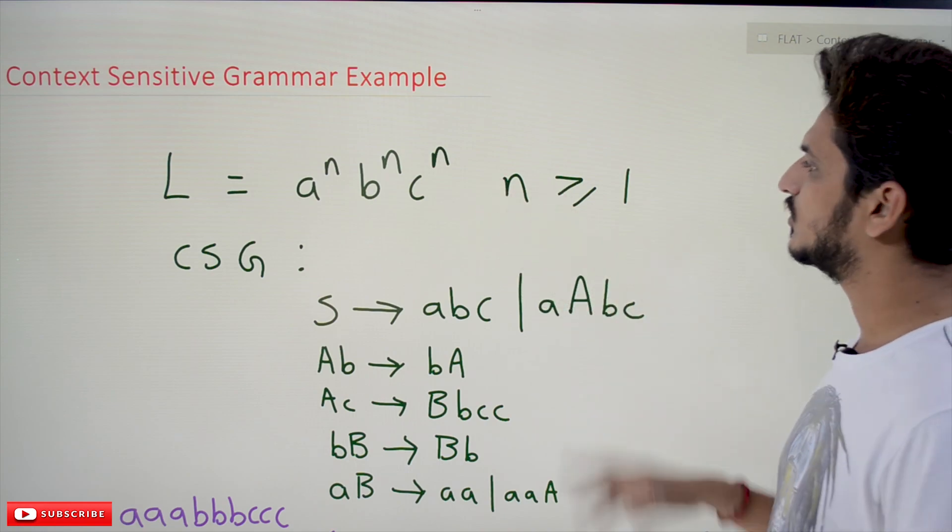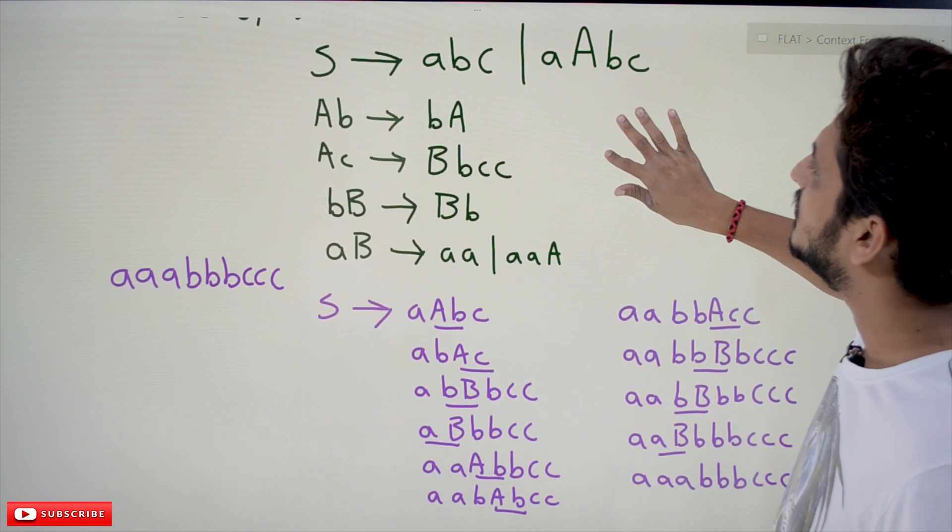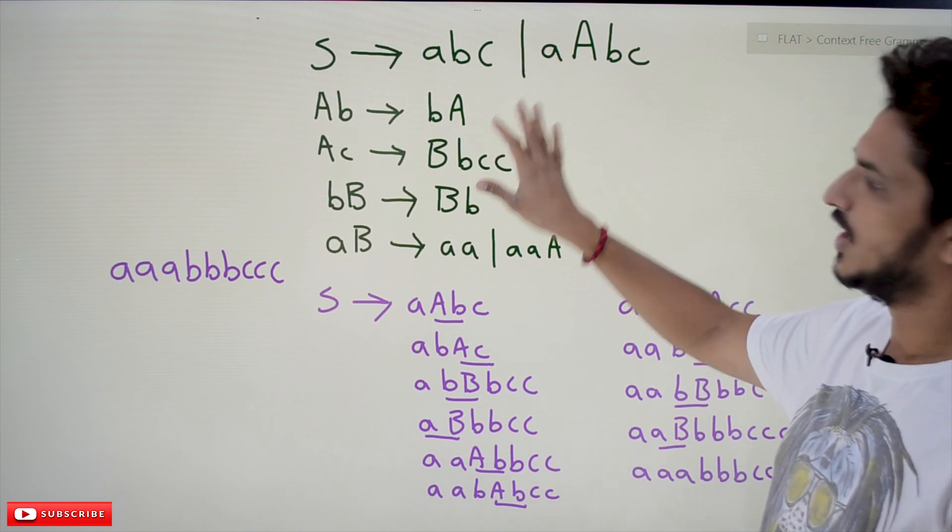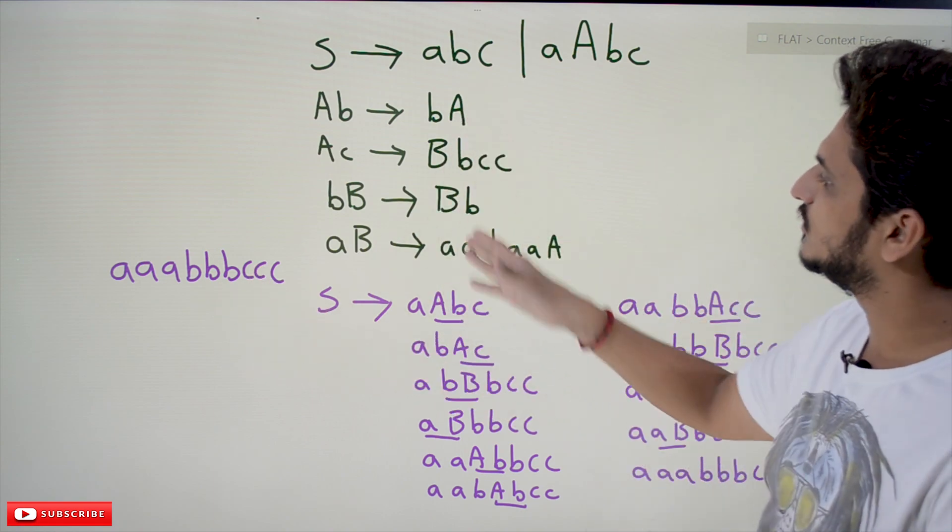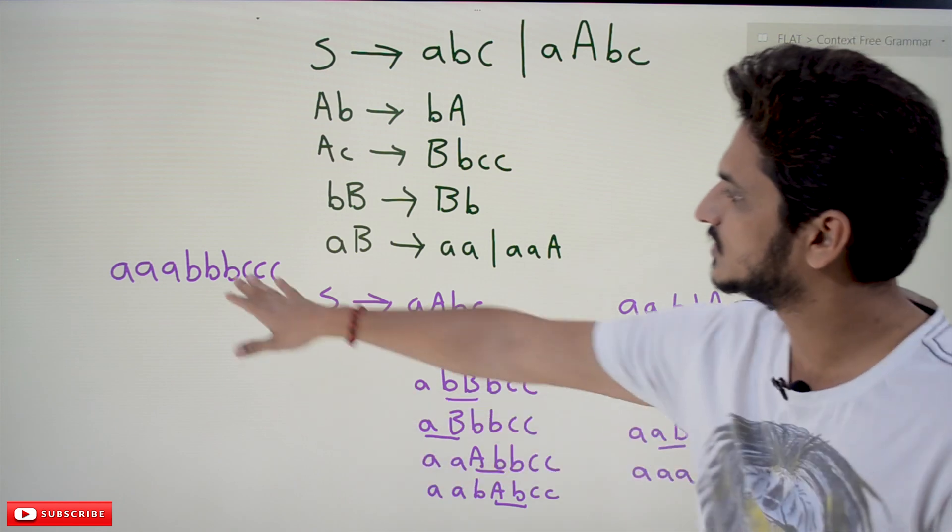where n ≥ 1. This is the context-sensitive grammar for L = a^n b^n c^n. We will derive one input string using this context-sensitive grammar. Here is the string we want to derive.